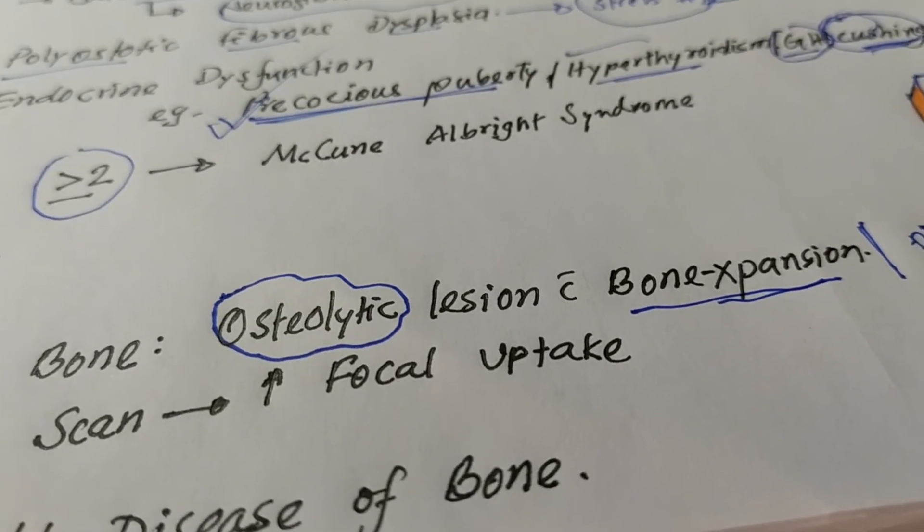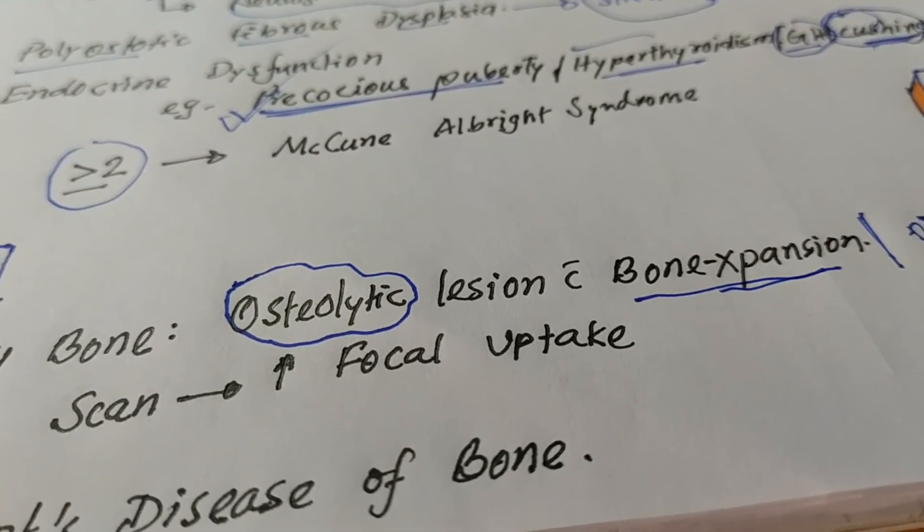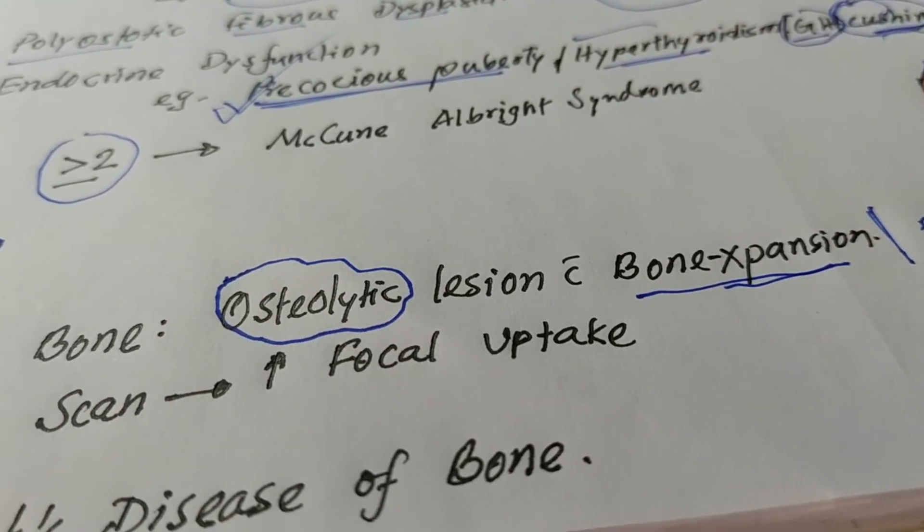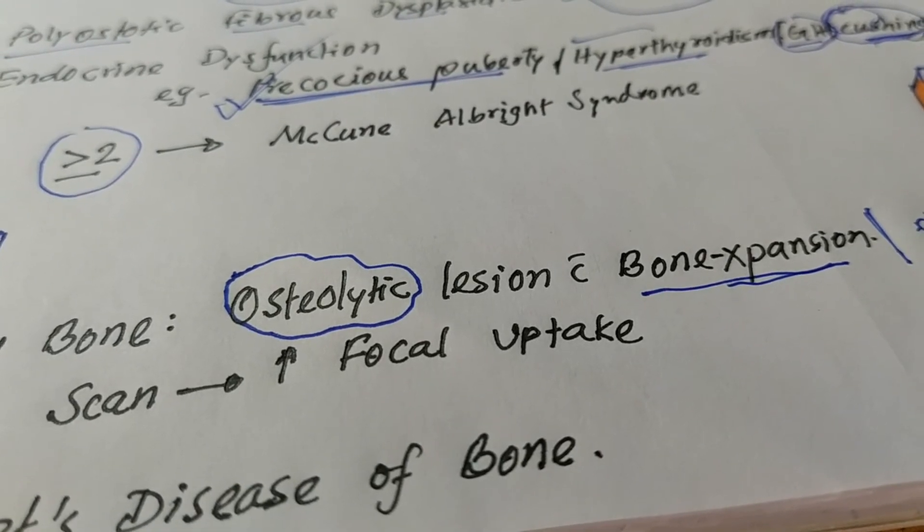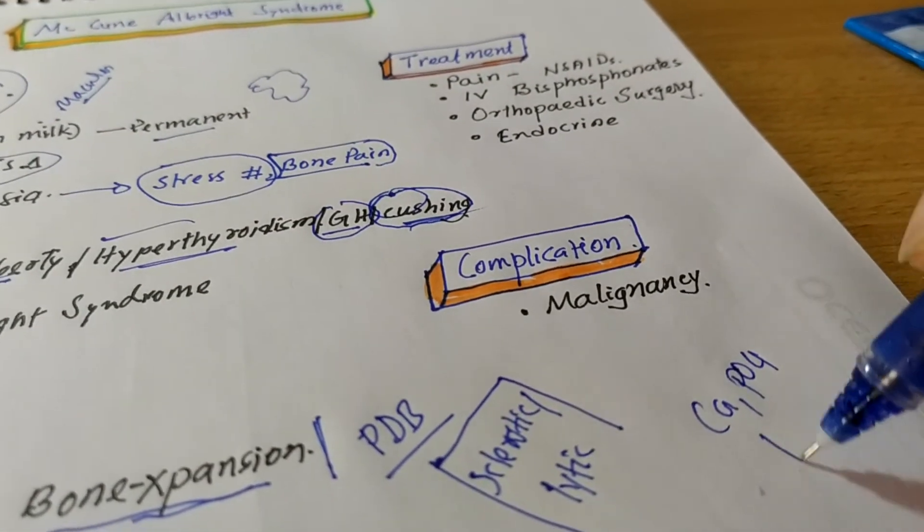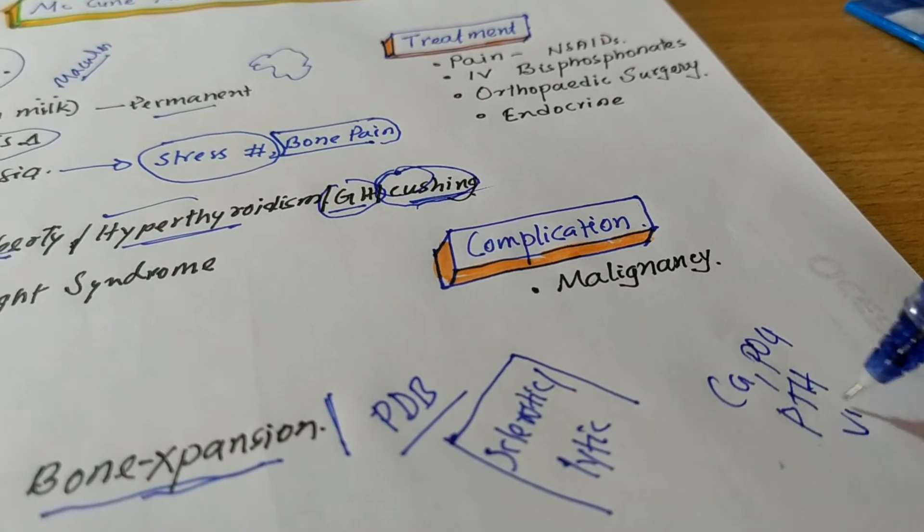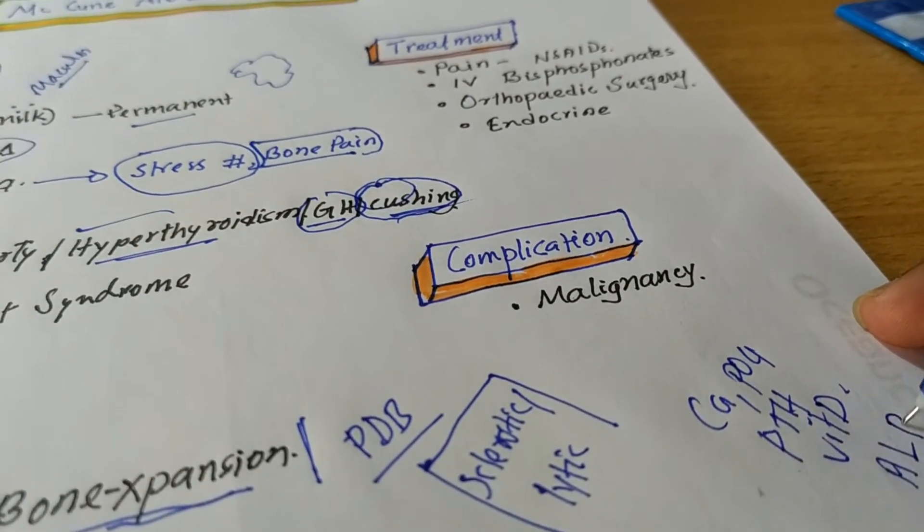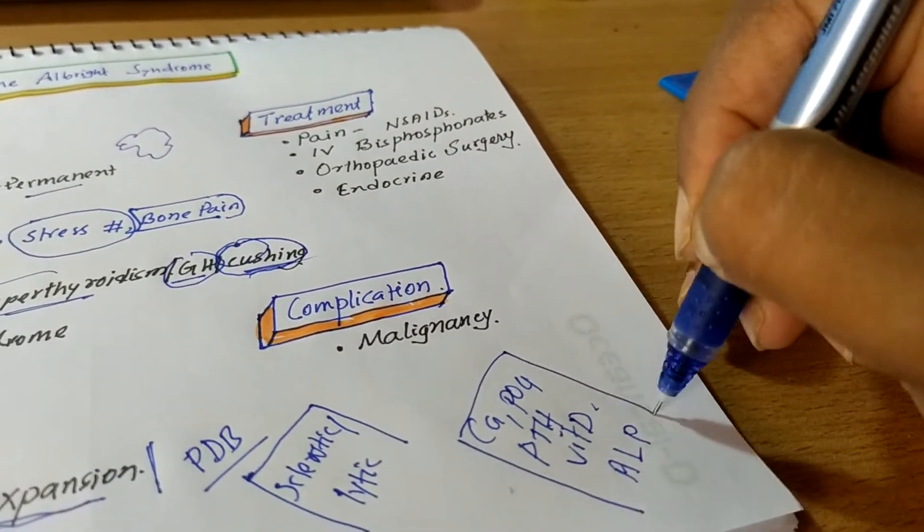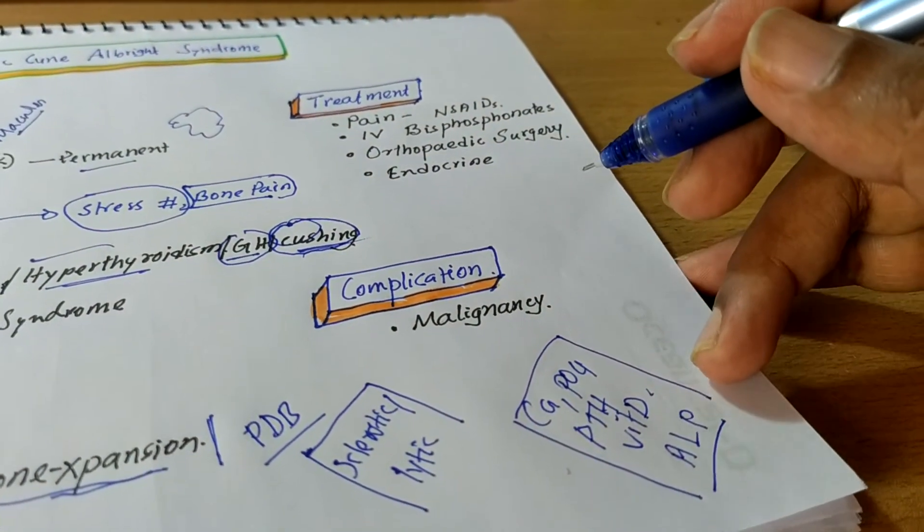But other, all other biochemical features like calcium, phosphate, parathyroid hormone, vitamin D, alkaline phosphatase. All these parameters are quite normal in McCune-Albright syndrome.